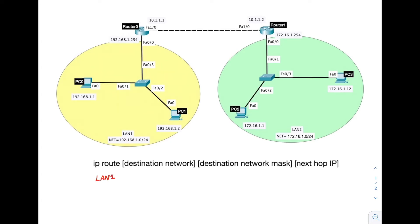For the first route, we are going from LAN 1 to LAN 2. We will configure route number 1 on router 0.